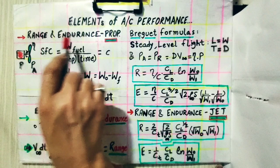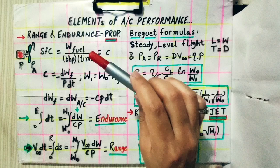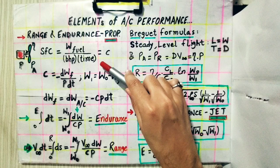Let's revisit the definitions of range and endurance. The range of an airplane is the amount of distance it can travel for a given amount of fuel. This distance is measured with respect to the surface of the Earth — the distance the aircraft travels through the air, measured on the ground, for a given tank of fuel.